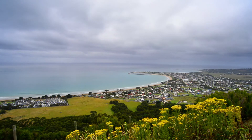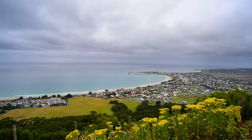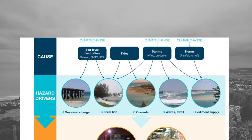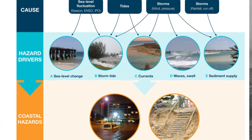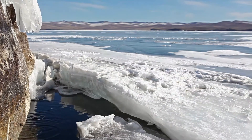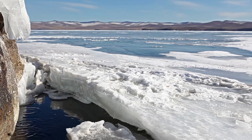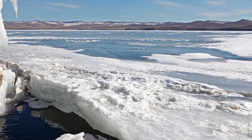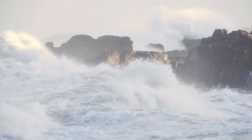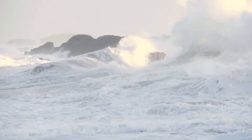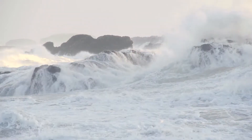Most of us in Australia live on or near to the coast. Two natural processes along the coast that we are familiar with are coastal erosion and inundation from high tides or storm events. Scientists tell us that climate change will increase the frequency and impacts of these two hazards on the coast. Sea levels will rise and together with increased storm events there will be greater inundation and coastal erosion.